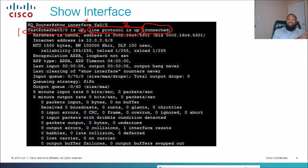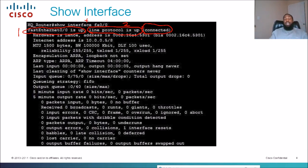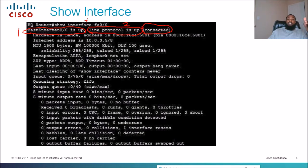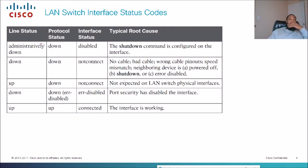These are the possible status codes. When layer one is up and line protocol is up, the interface is connected. If layer one is down and layer two is also down, the combination is down/down and it will say not connected. If layer one is down and protocol status says err-disabled, that means port security has disabled the interface.